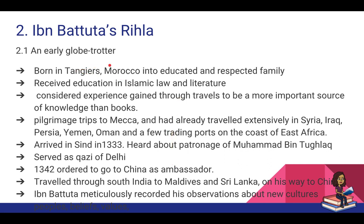Ibn Battuta was a globe-trotter who traveled across most of the old world. He was born in Tangiers in Morocco, one of the westernmost extremes of the known world at that time. He belonged to a respected family and received education in Islamic law and literature. He believed that true education came from traveling rather than knowledge picked up from books. He made many pilgrimage trips to Mecca and had already traveled extensively in Syria, Iraq, Persia, Yemen, Oman, and along the coast of East Africa.